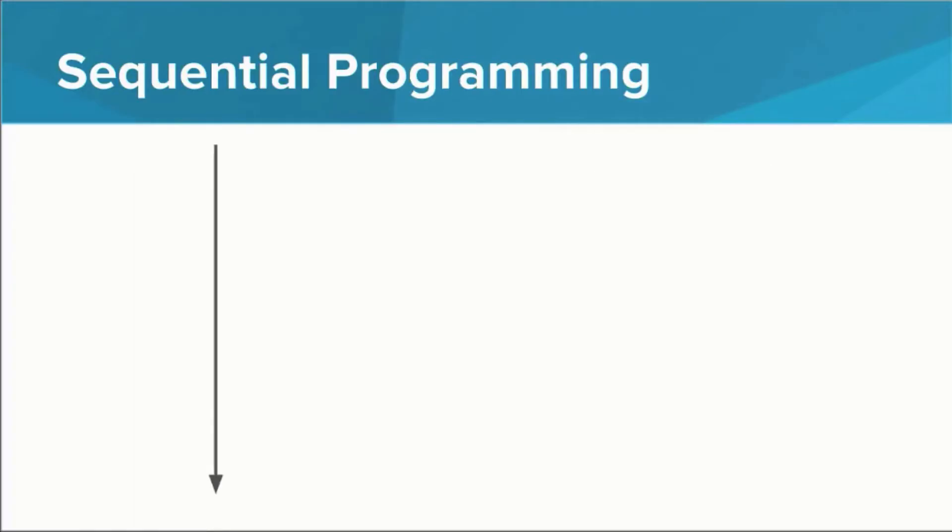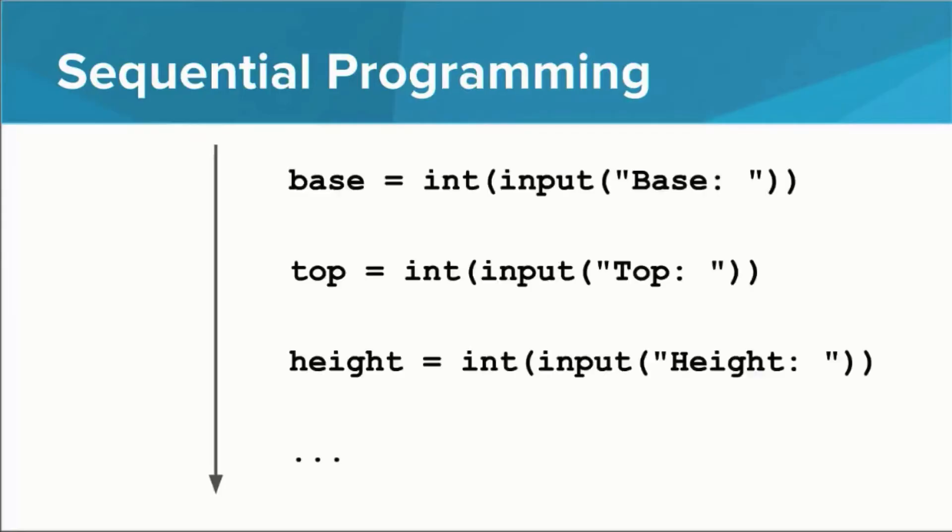So you can visualize the execution of your program like this. Here's an example program from a previous lesson that runs sequentially. The magic red arrow would just run the first line, and then the second line, and then the third line, and so forth, without ever deviating from its path.